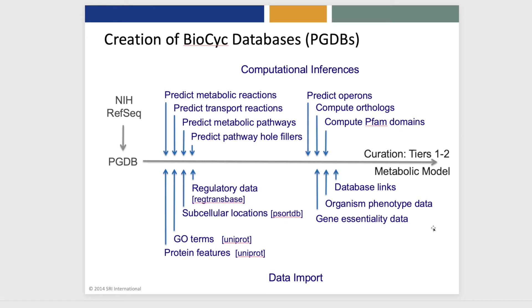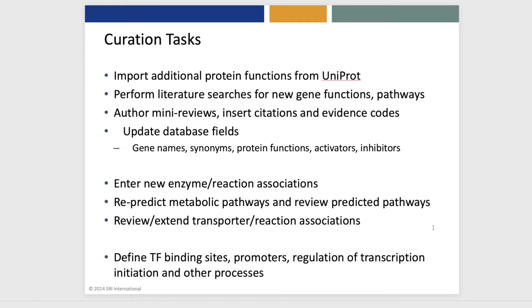For selected databases, we apply curation to yield either a tier 1 highly curated database or a tier 2 moderately curated database. Among the tasks our curators perform are importing additional protein functions from UniProt and performing literature searches to find new gene functions and pathways that are entered into the database.